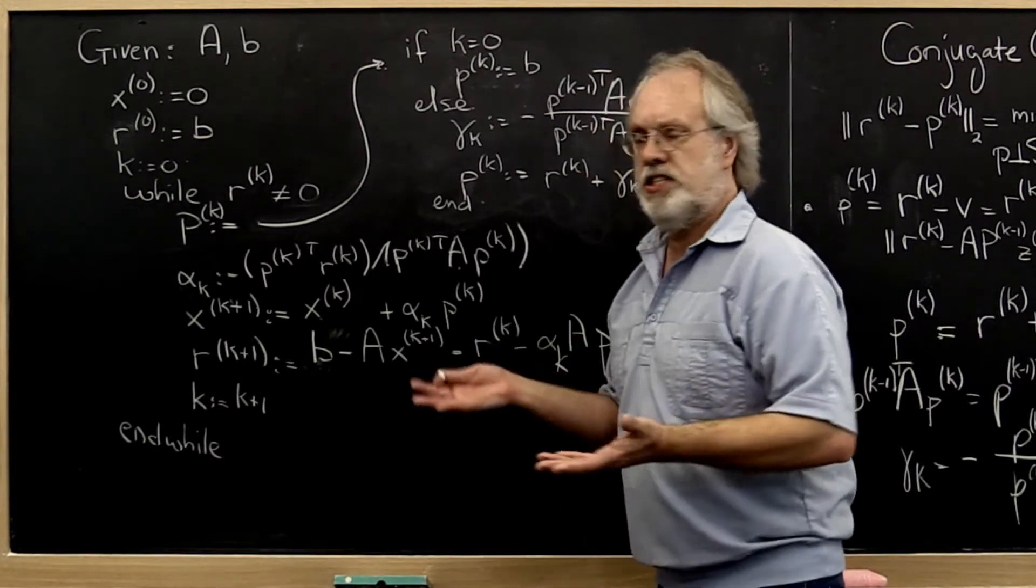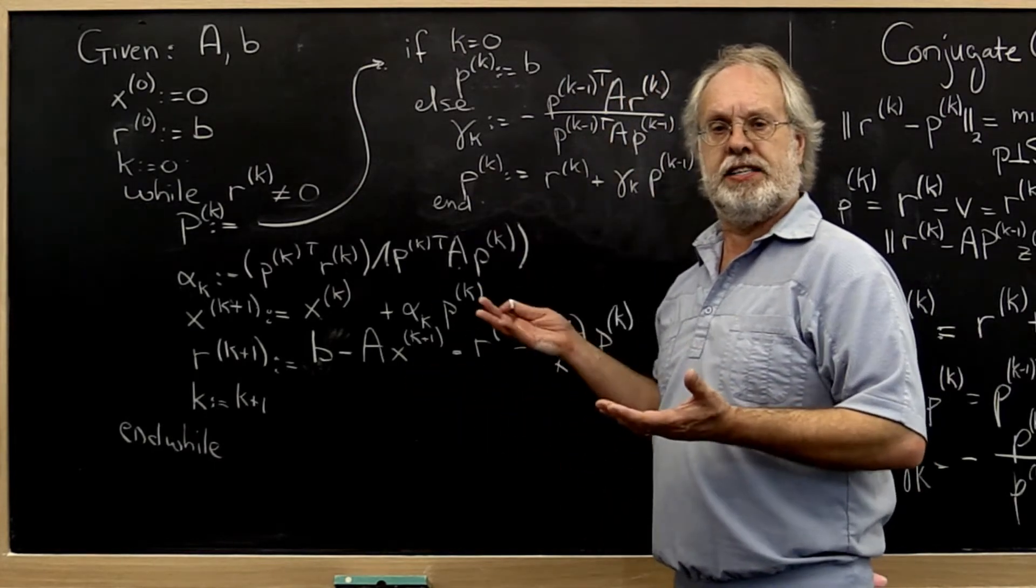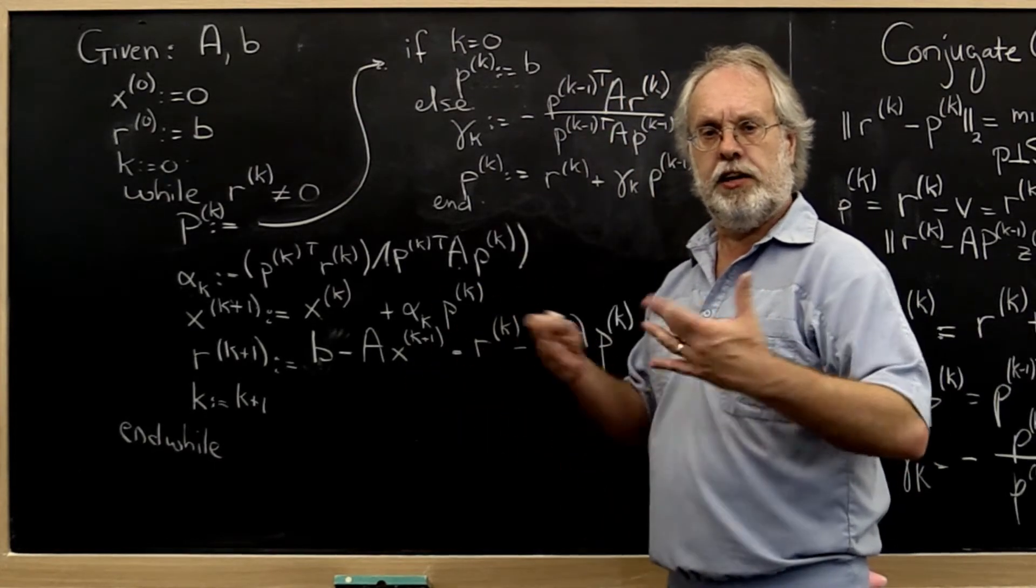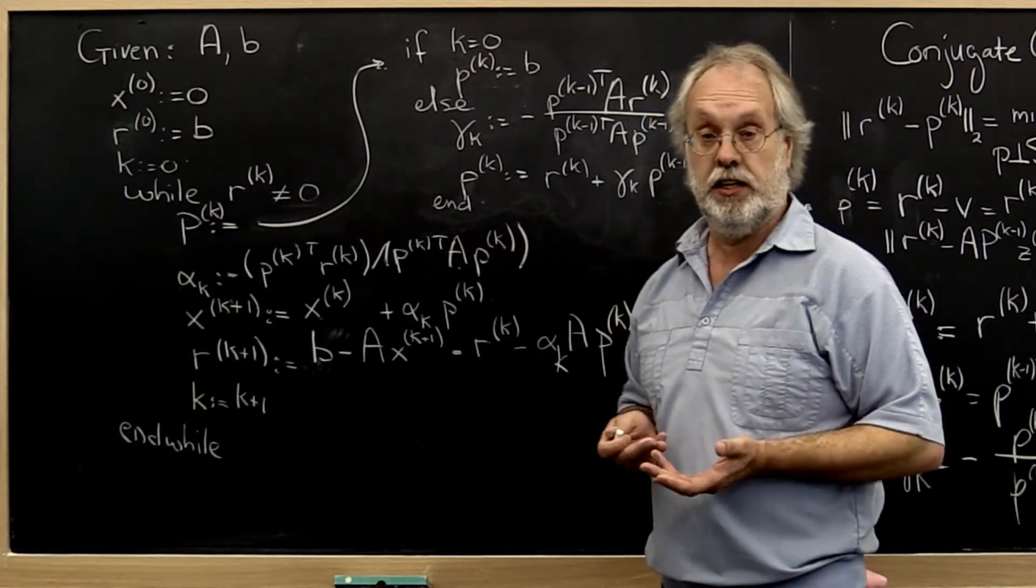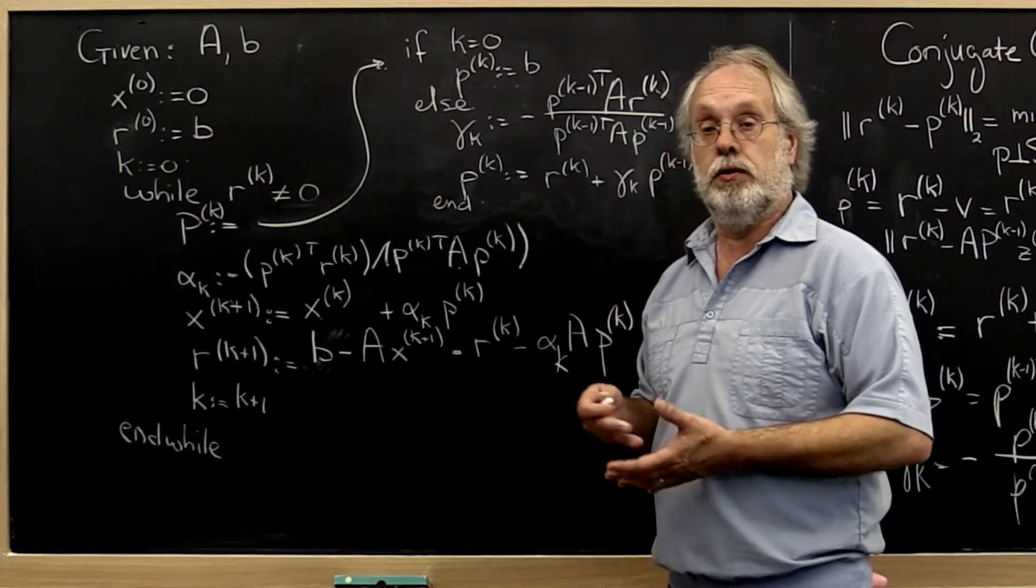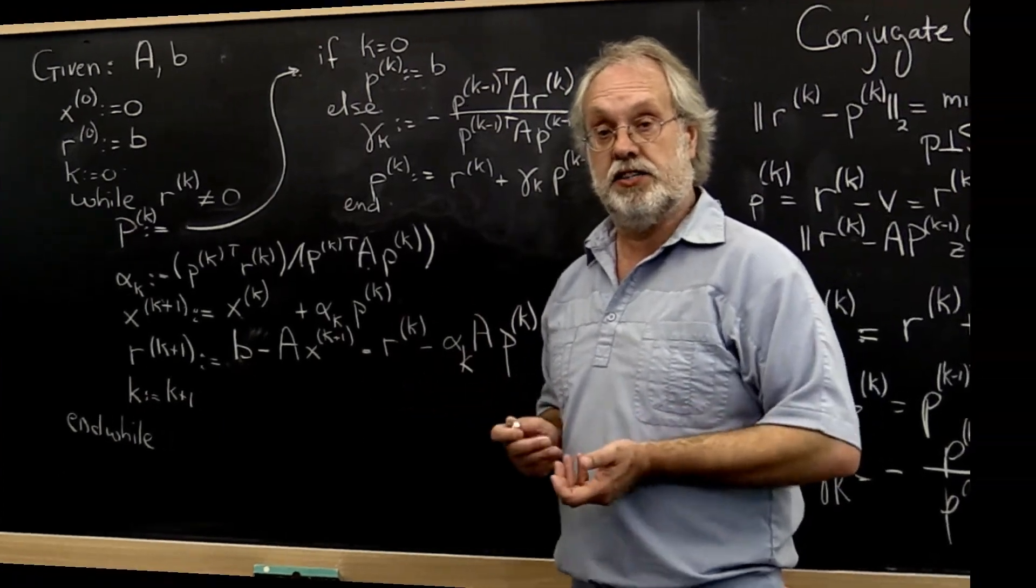After all, the residual starts being the right-hand side b and it keeps shrinking, and therefore we should be somewhat concerned about the fact that we could have catastrophic cancellation. And besides, in general, we typically never get an exact zero.